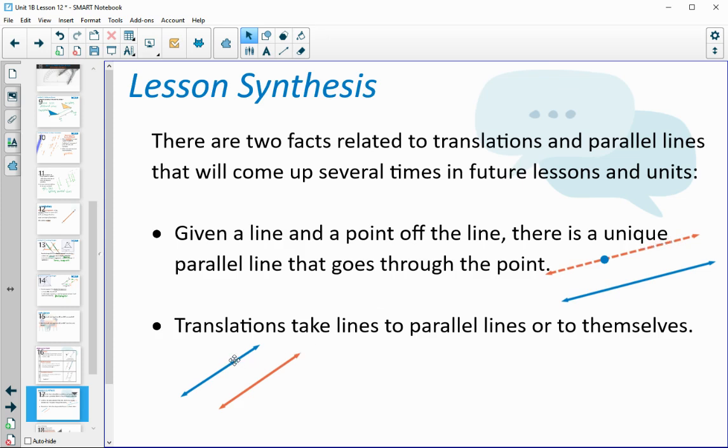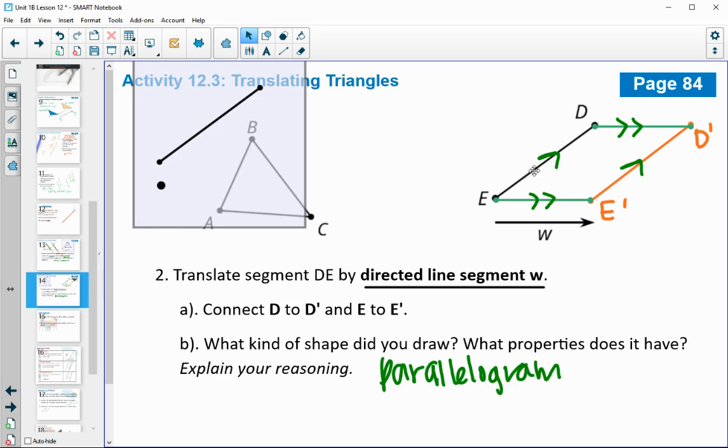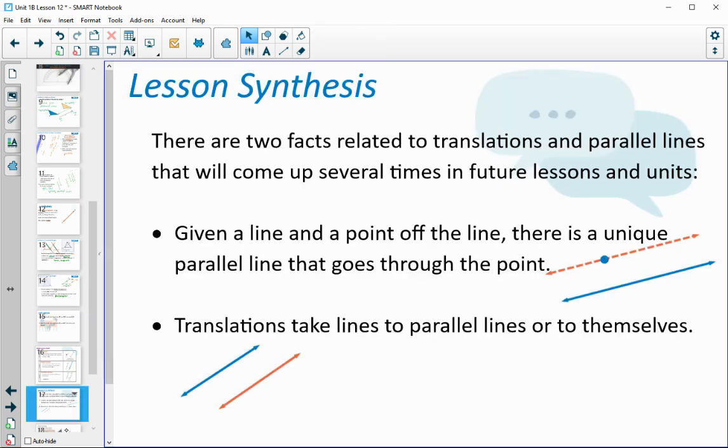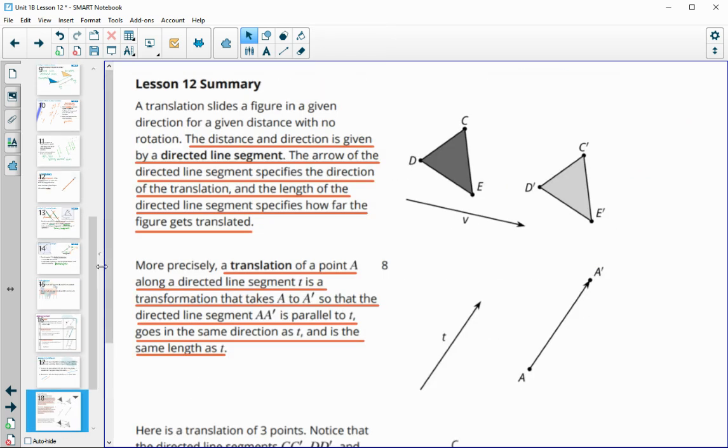And then the other idea is that translations take us to parallel lines. So if you follow a translation, if you do a translation, it's going to get you a parallel line. And we saw that here. We translated DE and it moved to another segment that was parallel to the original. So translations are going to give us parallel lines. And you can underline this in your lesson summary.